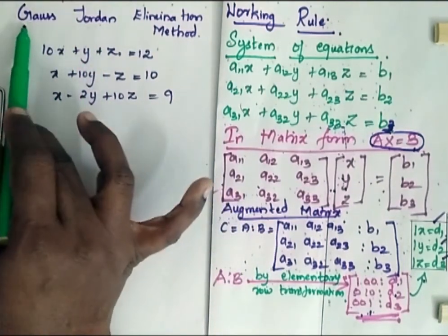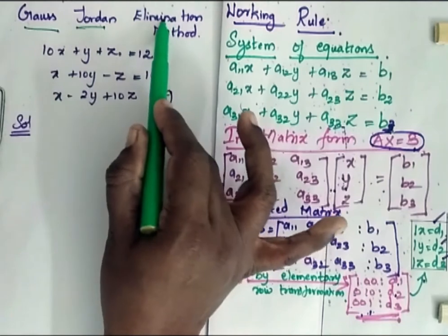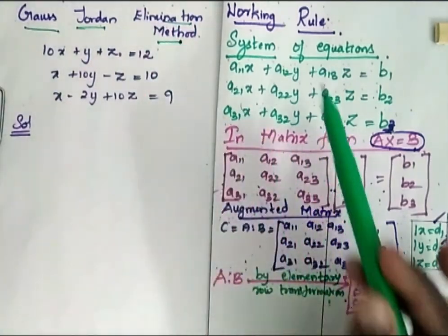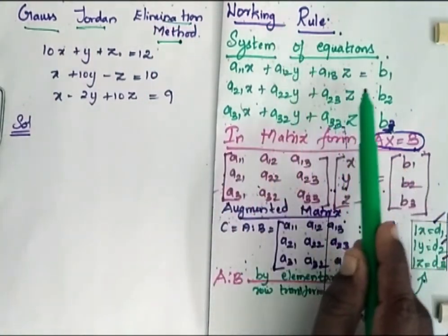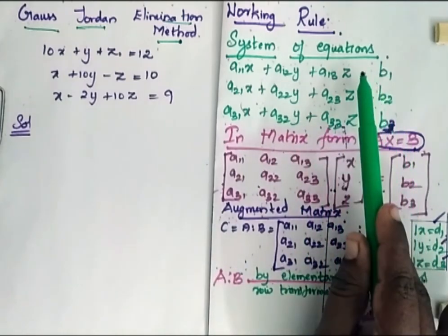Solve these equations by Gauss-Jordan elimination method. Now let us see the working rule. This is the system of equations that has been given.